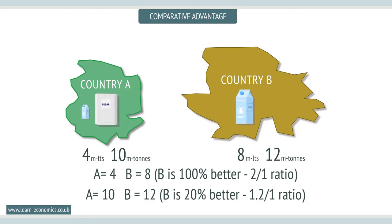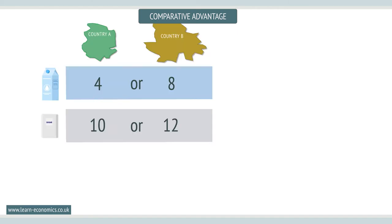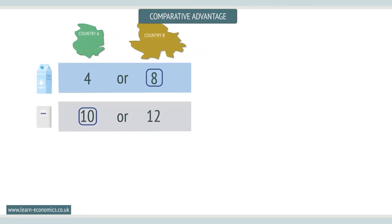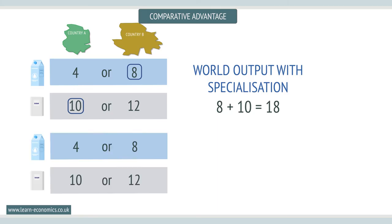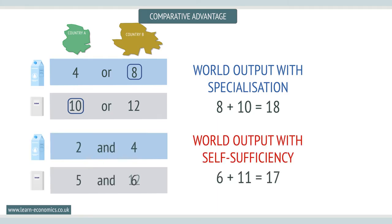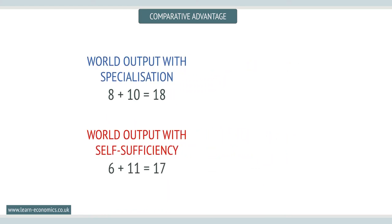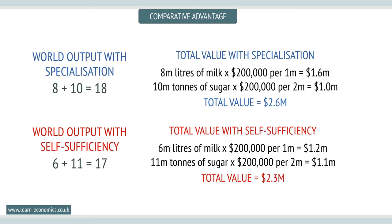The chart shows that if they specialize and then trade, world output would be 18 units. However, if they divide up their resources to produce both, then total output would be 17 units. The relative value of world output is $2.6 million with specialization and trade, and $2.3 million with self-sufficiency.